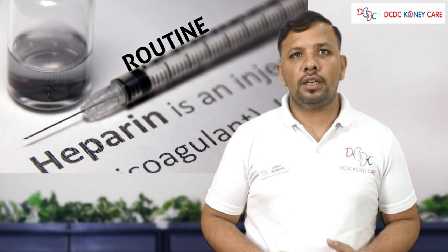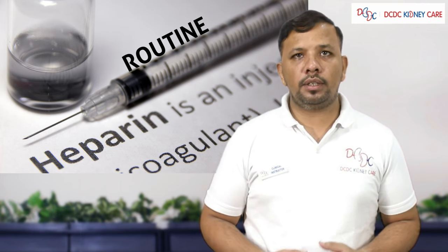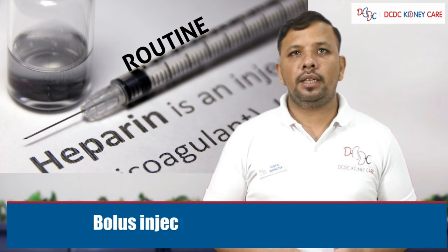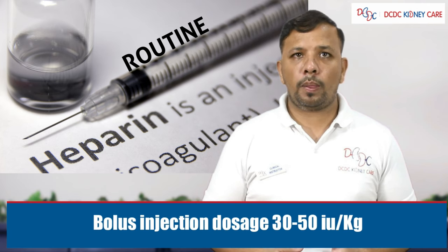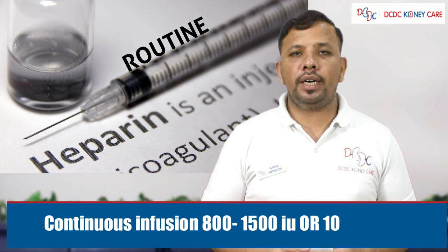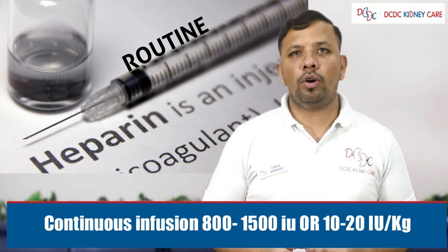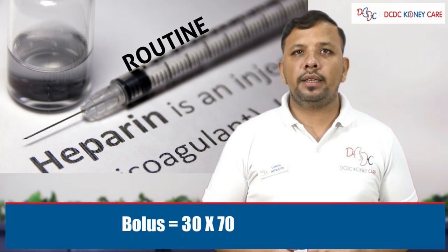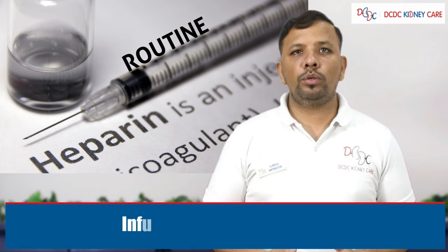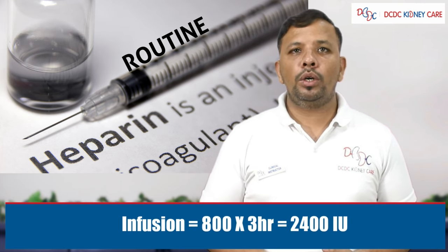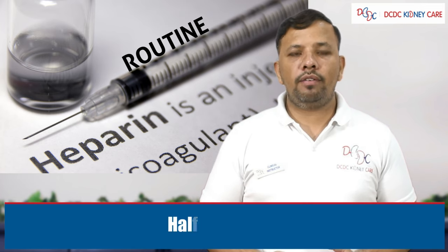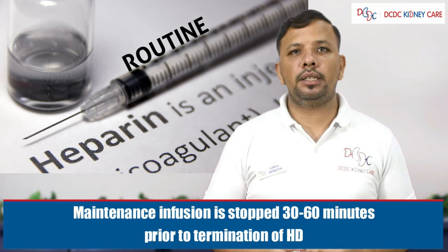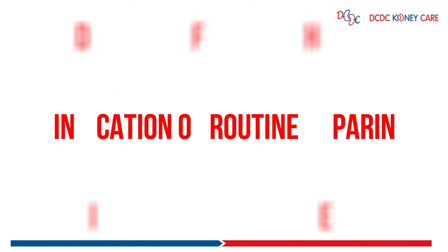In routine heparin, we administer heparin by two methods: a bolus at the start of dialysis and a continuous infusion that continues during dialysis. The bolus dose is 30 to 50 IU per kg body weight. For continuous infusion, the dose is 800 to 1,500 IU, or 10 to 15 IU per kg body weight. For example, for a 70 kg patient on 4-hour dialysis: bolus dose = 30 × 70 = 2,100 IU; infusion dose = 800 × 3 hours = 2,400 IU. The half-life of heparin is 1 hour, and the maintenance dose should be stopped 30 to 60 minutes prior to termination of hemodialysis.